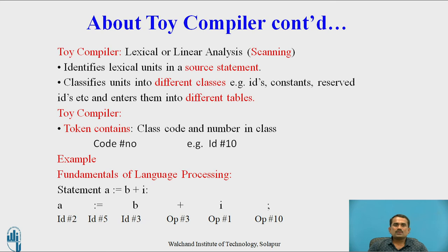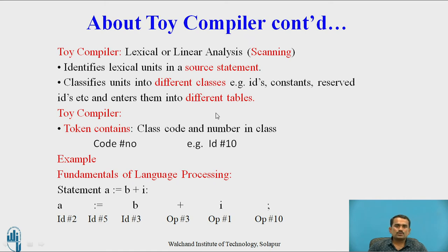About the TOY compiler: in the TOY compiler, lexical and linear analysis — that is scanning — identifies lexical units in a source statement. It classifies units into different classes: ID, constants, and reserved IDs, etc., and enters them into different tables. A token contains a class code and a number in class — what is the class code? It means the class hash number.